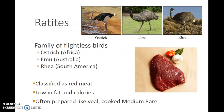Ratites are a family of flightless birds. Here at the top, you can see the ostrich — that's in Africa. The emu comes from Australia, and the rhea lives in South America. With these flightless birds, there are a couple different cuts that we can use. Here I have a picture of a fan cut. The fan is taken and broken into small medallions served as steaks. All ratite meat is classified as red meat, and is often prepared just like veal, cooked medium-rare. It is low in fat and calories.